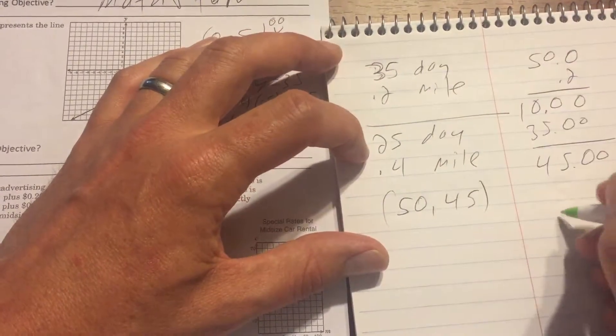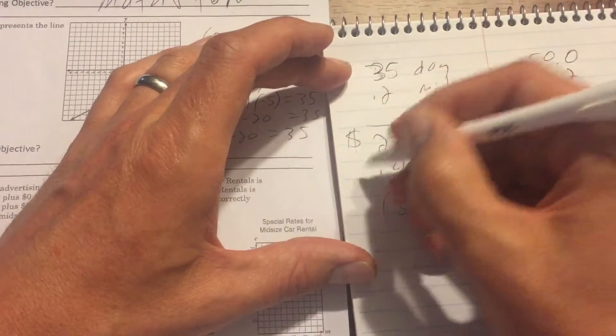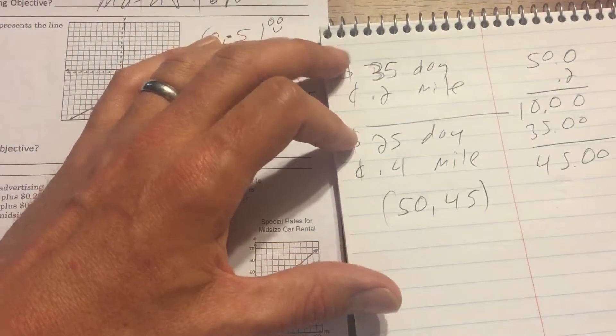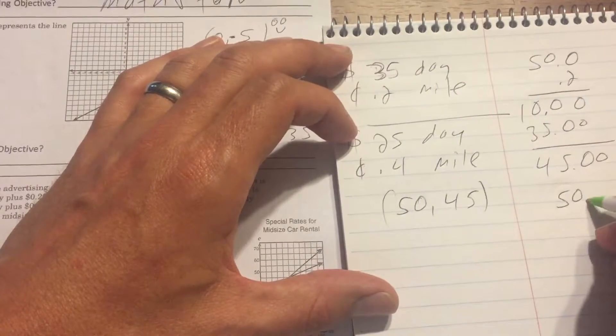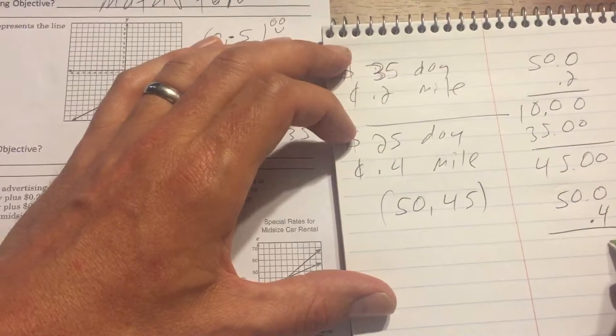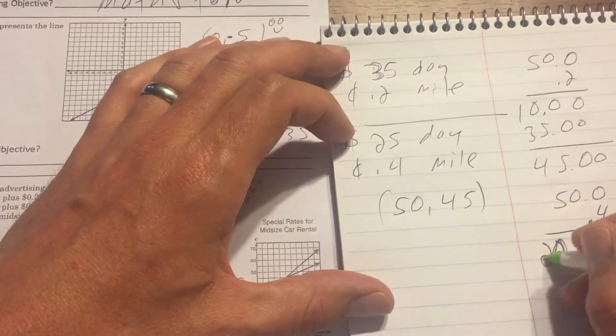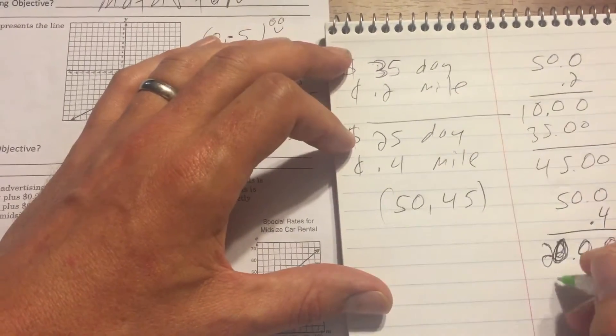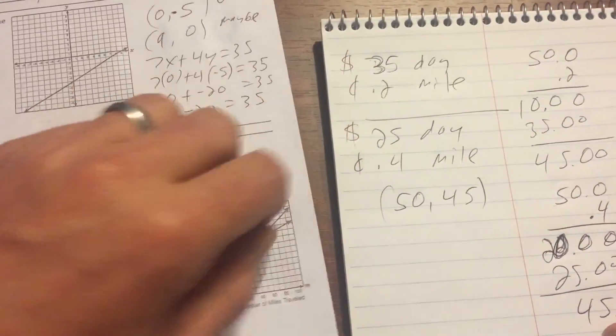So let's figure it out then for $0.40 per mile. We're going to do 50 miles again, put that little decimal in there so we don't get confused what place value we're at. Count both of these up, put it here. So that's going to be $20. And then we'll add in the $25 a day, and that's going to get us to that $45 as well.